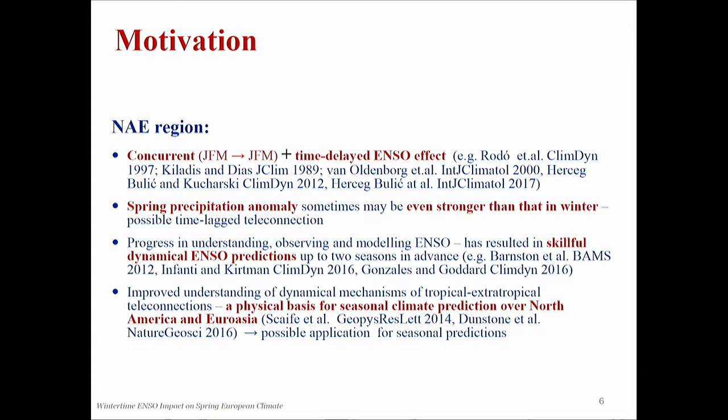So what was the motivation to analyze time-delayed ENSO impact over Europe? We obtained that concurrent ENSO impact was found in many modeling and observational studies. But there are also some studies indicating time-delayed ENSO impact, and that spring precipitation anomalies are sometimes even stronger than wintertime precipitation anomalies associated with ENSO. There has also been quite significant progress in understanding modeled and observed ENSO impact, and dynamical ENSO predictions have improved. So if we find some correlation between wintertime ENSO and springtime response over Europe, that might have an impact on seasonal predictions.